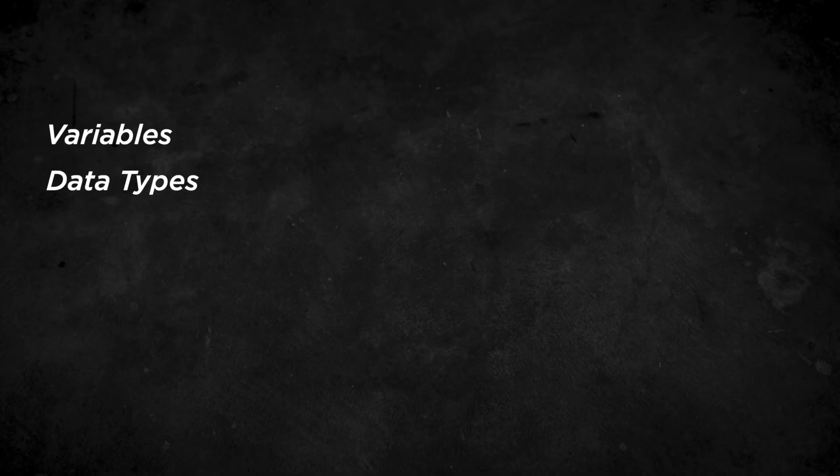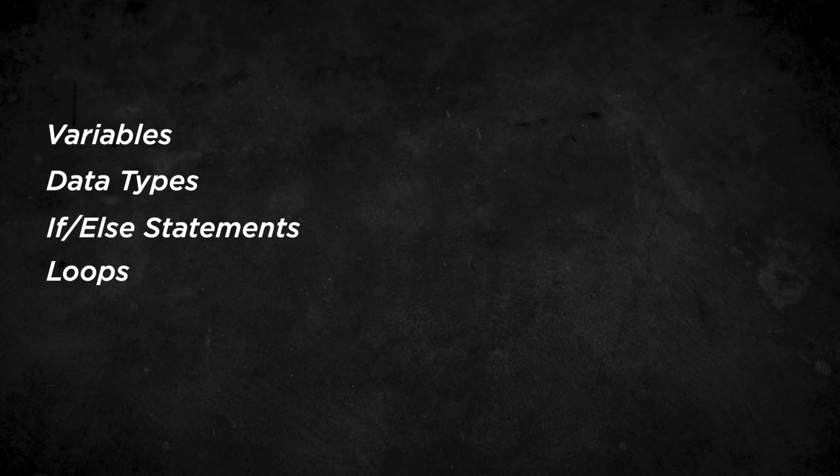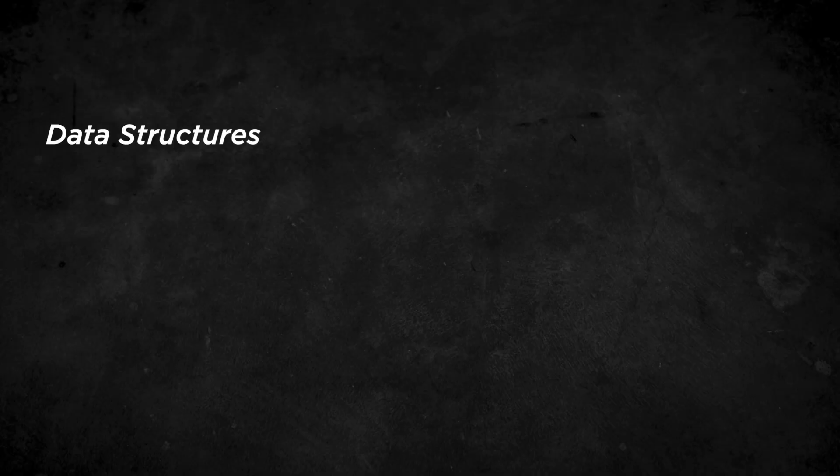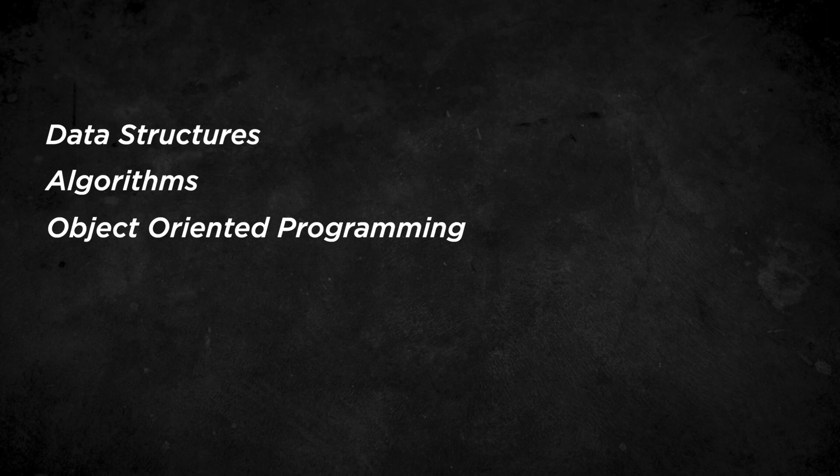I won't go into too much detail on how to learn Python or Java here, but some basic concepts you need to understand are variables, data types, if-else statements, and loops. These should be pretty straightforward and are really just explaining the syntax of the language. Once you've mastered those, try to learn more complex computer science concepts such as data structures, algorithms, and object-oriented programming.